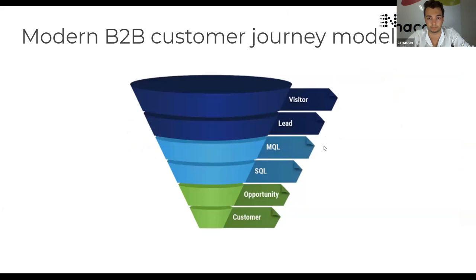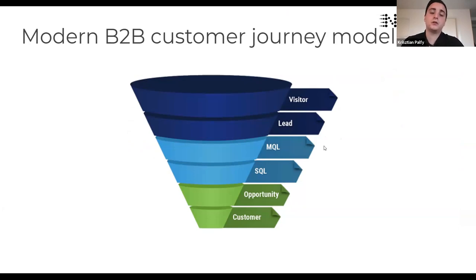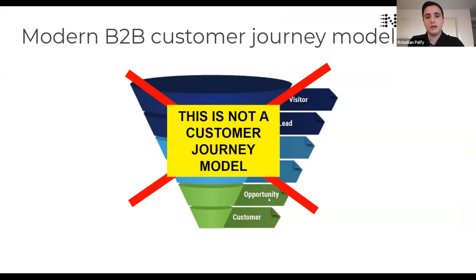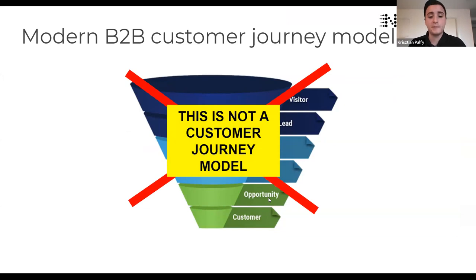The typical model people imagine for B2B customer journey is: visitor arrives on website, becomes a lead, gets retargeted, becomes a marketing qualified lead, sales reaches out, they become a sales qualified lead, then an opportunity, then a customer. But the problem with this model is that it has nothing to do with an actual B2B customer journey — it's not representative of what a customer goes through when deciding to purchase. It's a simplified, seller-perspective version of the marketing and sales process.